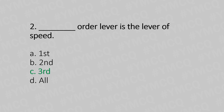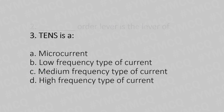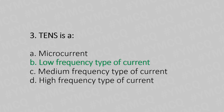Third question: TENS is a — Option A: microcurrent. Option B: low frequency type of current. Option C: medium frequency type of current. Option D: high frequency type of current. The answer is Option B, low frequency type of current.